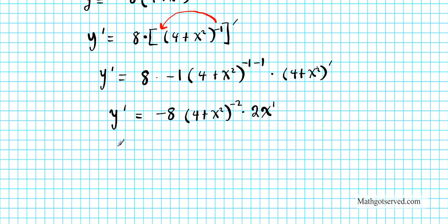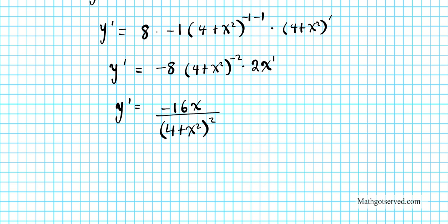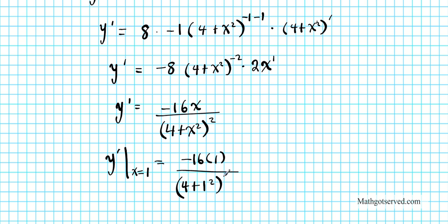Simplifying, we multiply negative 8 by 2x to get y prime equals negative 16x divided by (4 plus x squared) squared. Now we evaluate this derivative at x equals 1 to get our slope. Plugging in: negative 16 times 1 divided by (4 plus 1 squared) squared equals negative 16 over (5 squared), which equals negative 16 over 25.